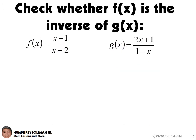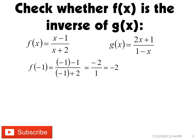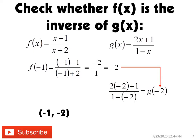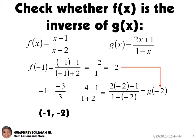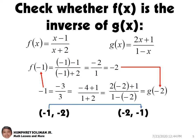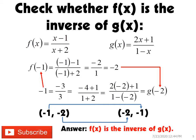Let's try another example. We can try negative 1 to evaluate f(x); we will get f(−1) equals −2, and the ordered pair is (−1, −2). If we use −2 to evaluate g(x), the result will be −1, so the ordered pair is (−2, −1). You can see that the input and output for the two functions were switched, so f(x) is the inverse of g(x).